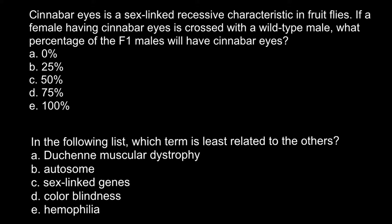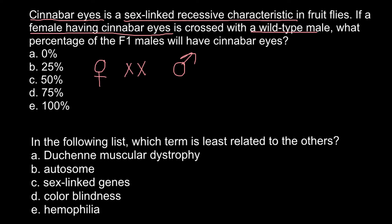Let's write down the genotype of the female. We are told that it is a sex-linked recessive characteristic, and the color would be Cinnabar eyes. So when we have a female having Cinnabar eyes, that means we have two recessive alleles — we use small x, small x — so this is the female. The male would be wild type, and his genotype would be capital X, which is the dominant trait, and Y.